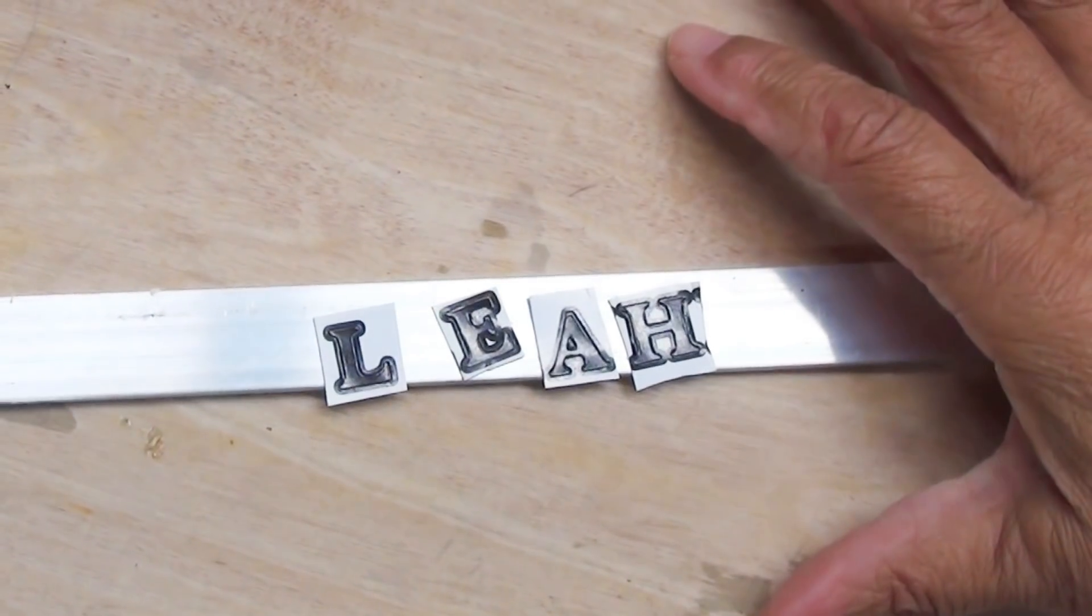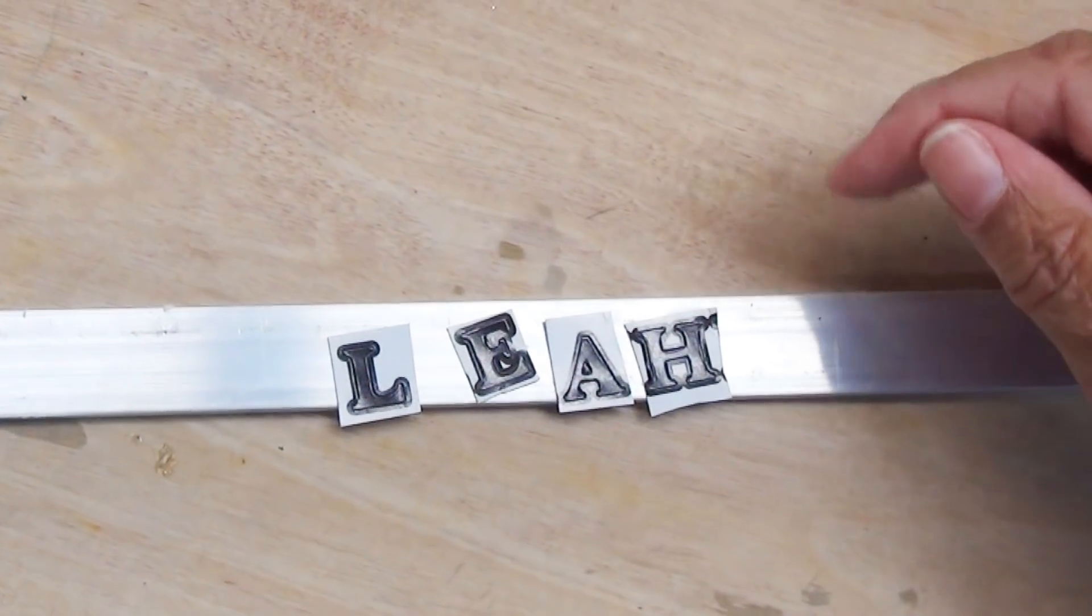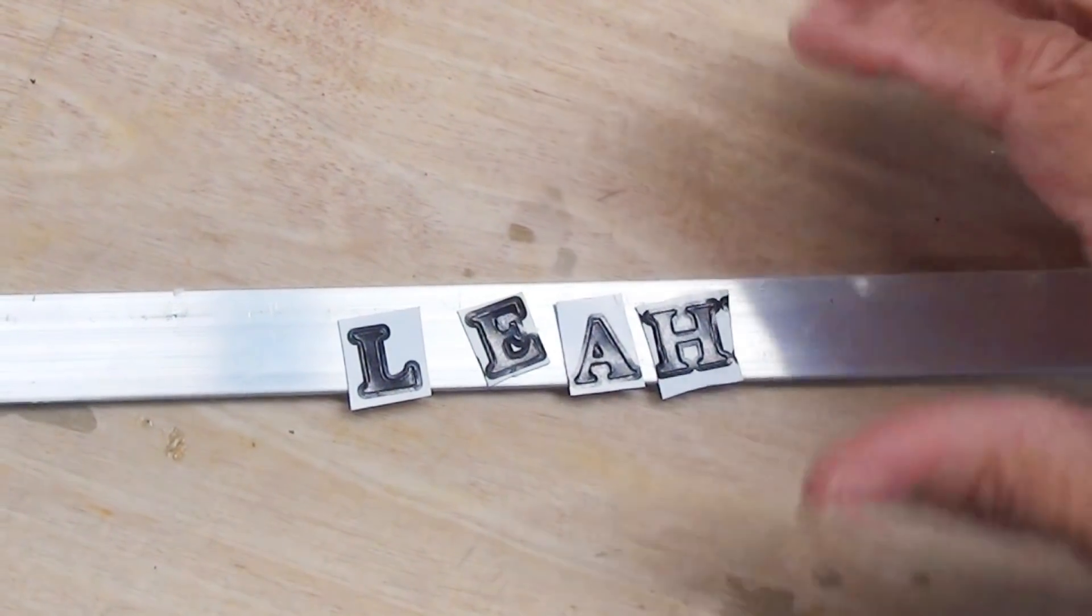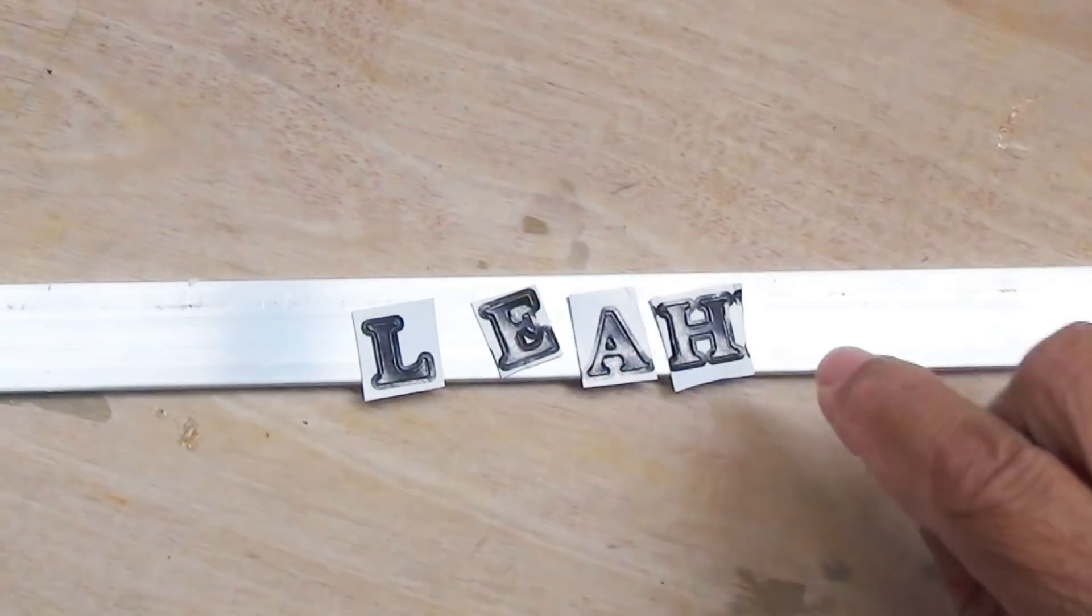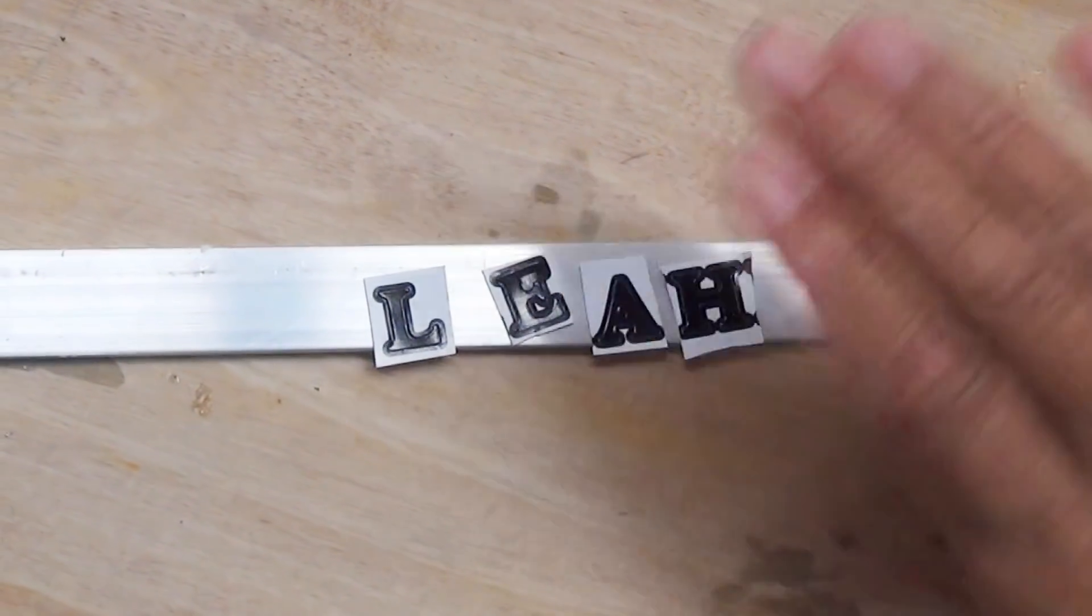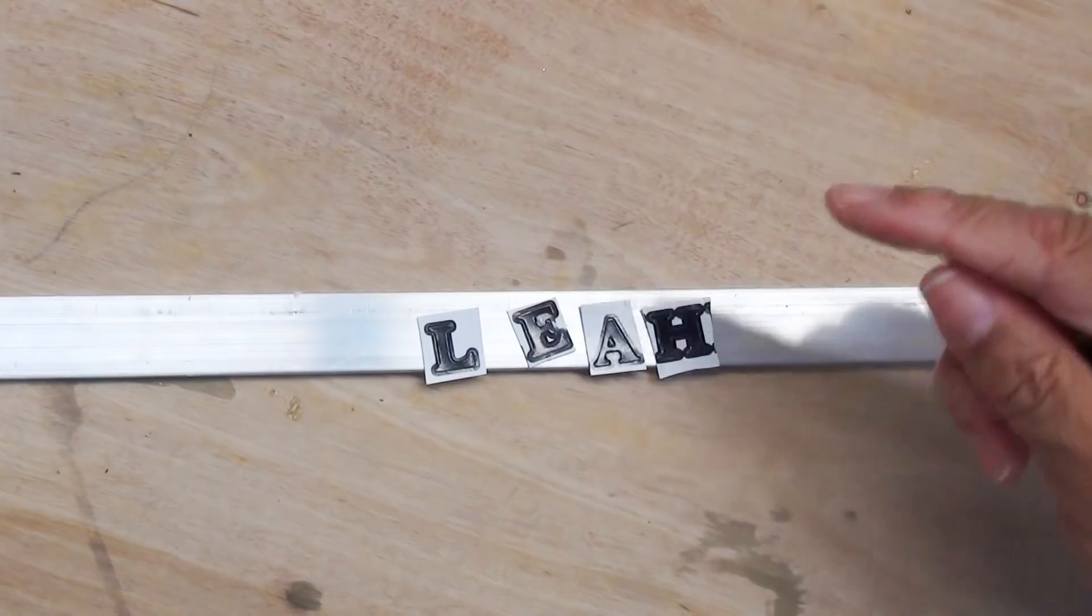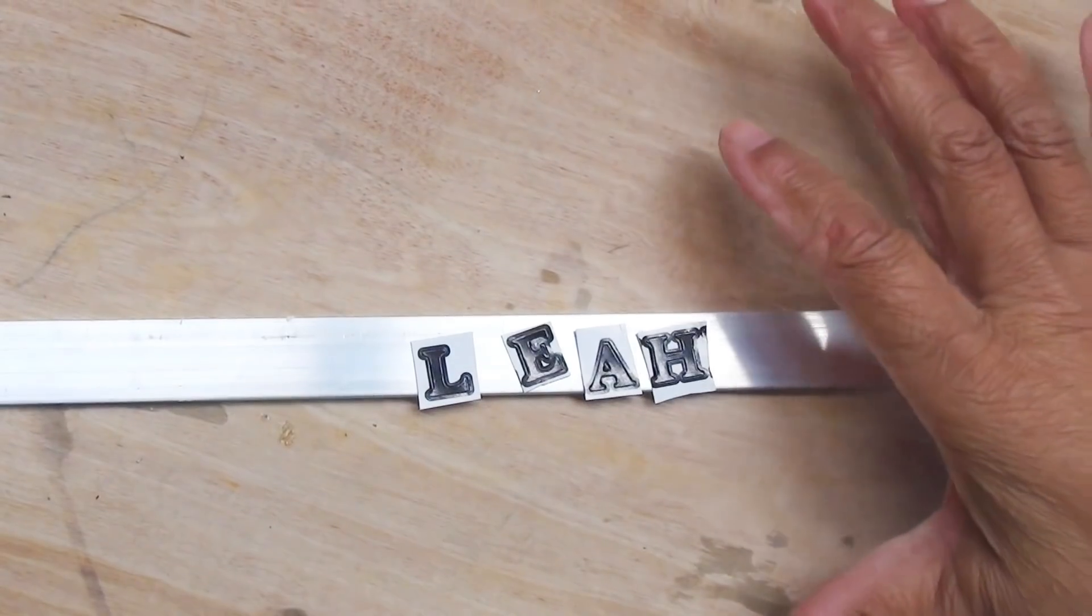And there are all kinds of resists. But in our case, we're using vinyl letters to prevent the metal from being etched where we don't want it. So let me show you how we're going to do our test.